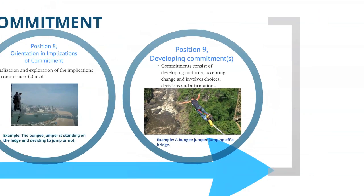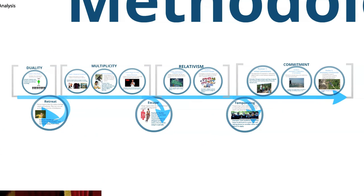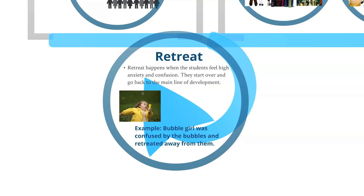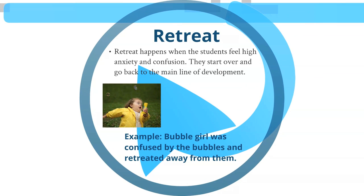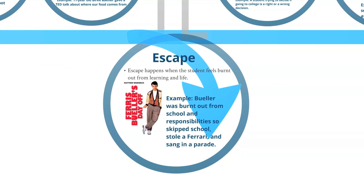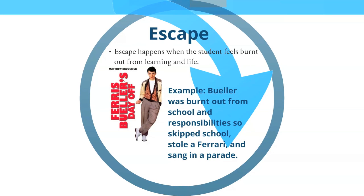Along the bottom of this illustration, there's a blue line that indicates the maturation of students evolving through these nine positions. However, there are three deflections. An example of retreat is bubble girl, who was confused by the bubbles and retreated away from them. The second deflection is escape. An example of escape is when Ferris Bueller was burnt out from school and responsibilities, so skipped school, stole a Ferrari, and sang in a parade.